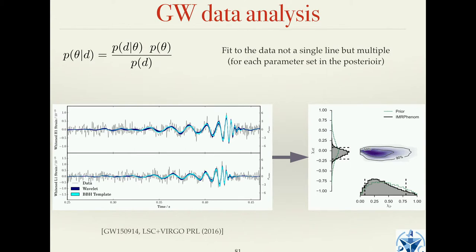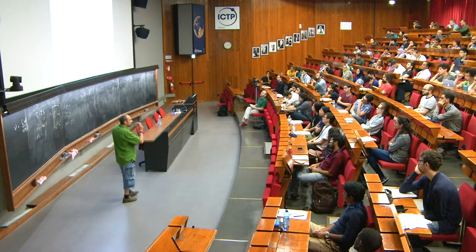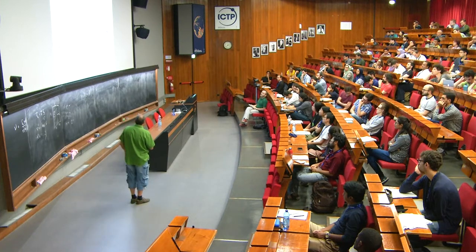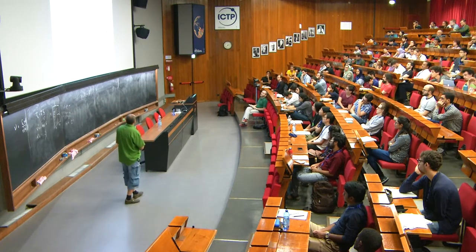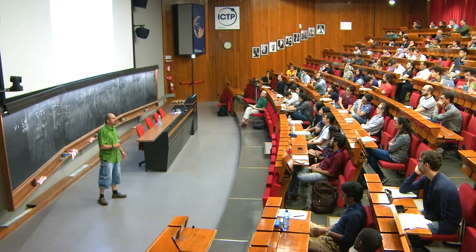At the end you get not a single line as in maximum likelihood estimation, but rather for each posterior distribution of your parameter set you can compute a line. You end up with a broad line that encapsulates all possible parameters the signal could have — it has finite width. You can see the finite width here.